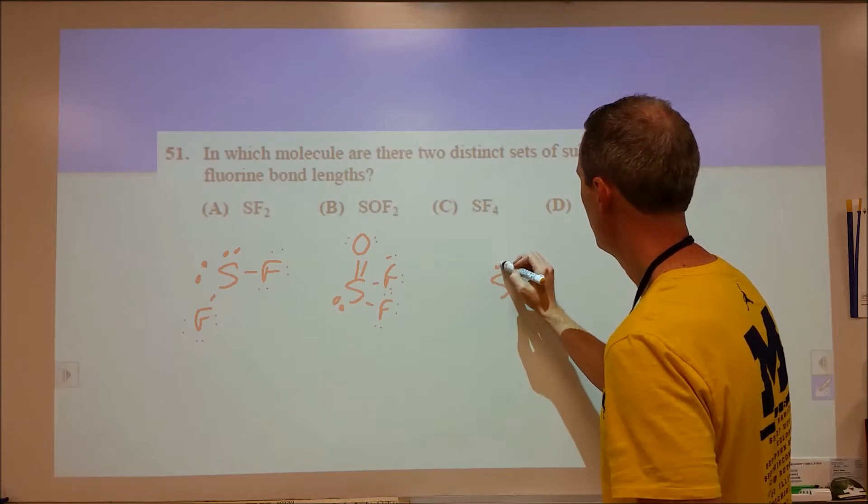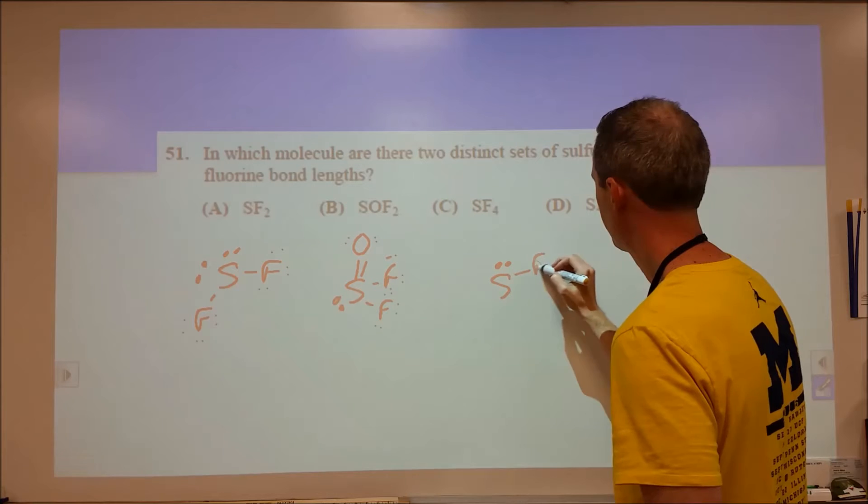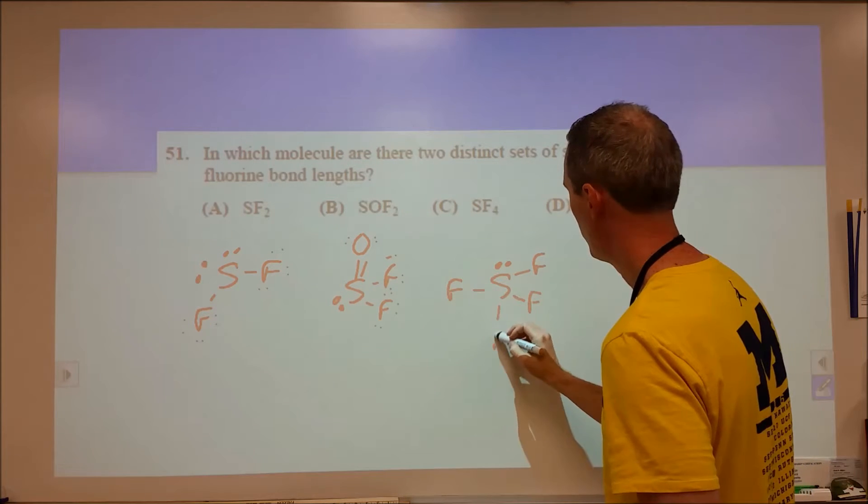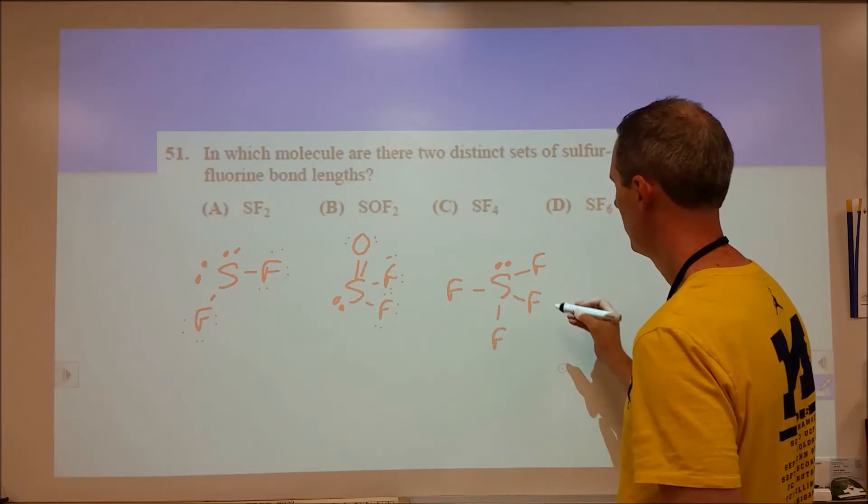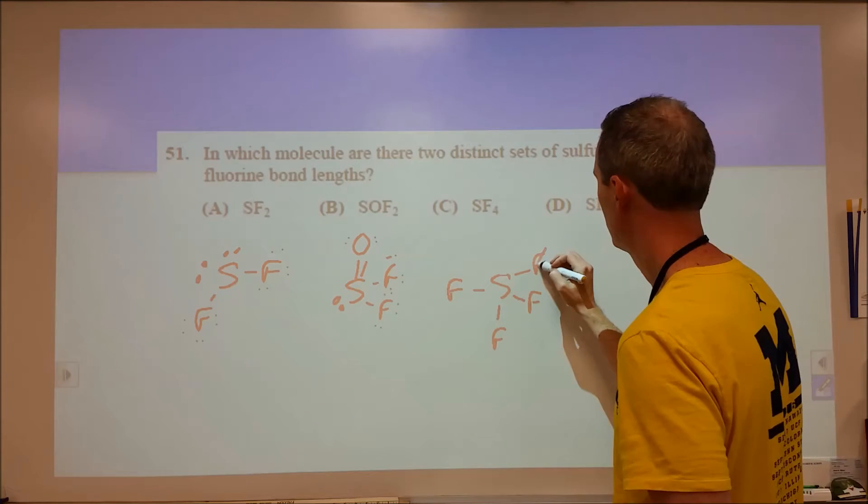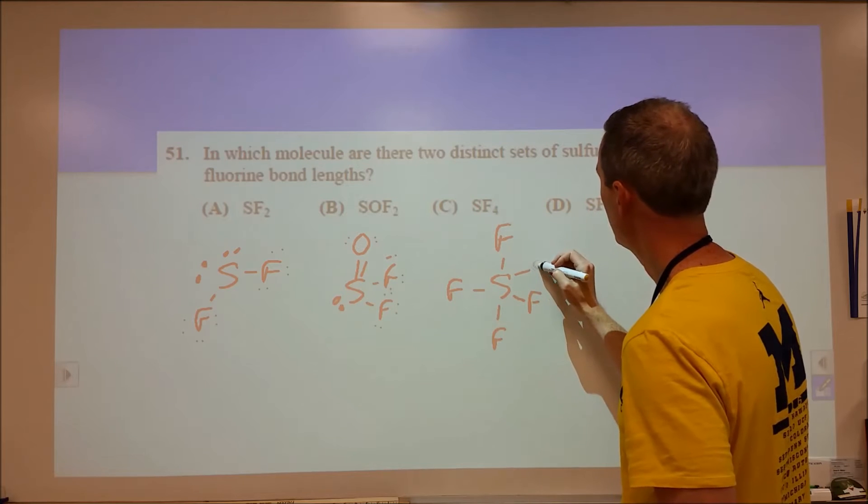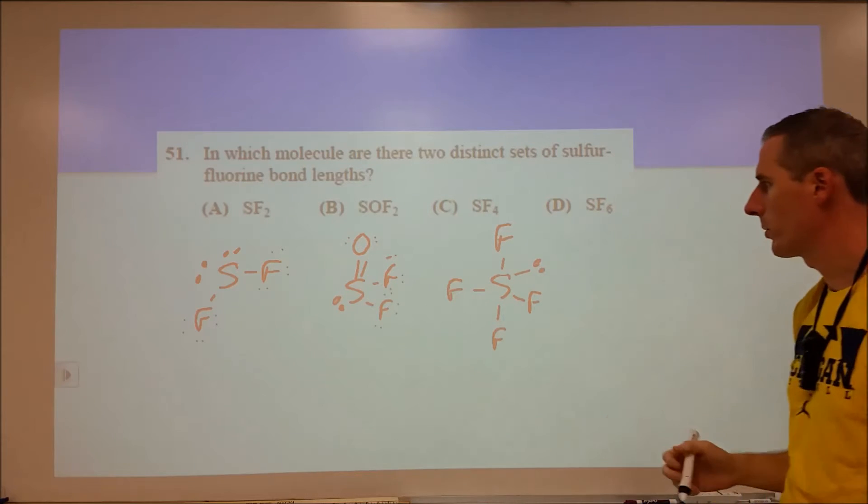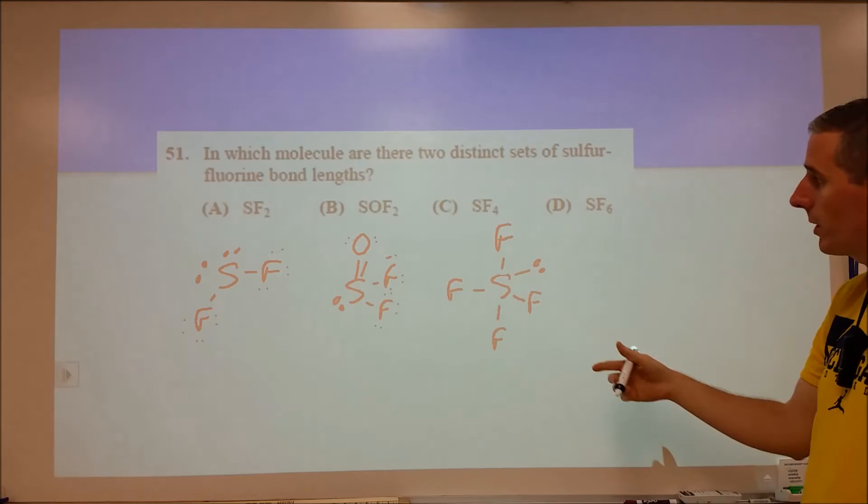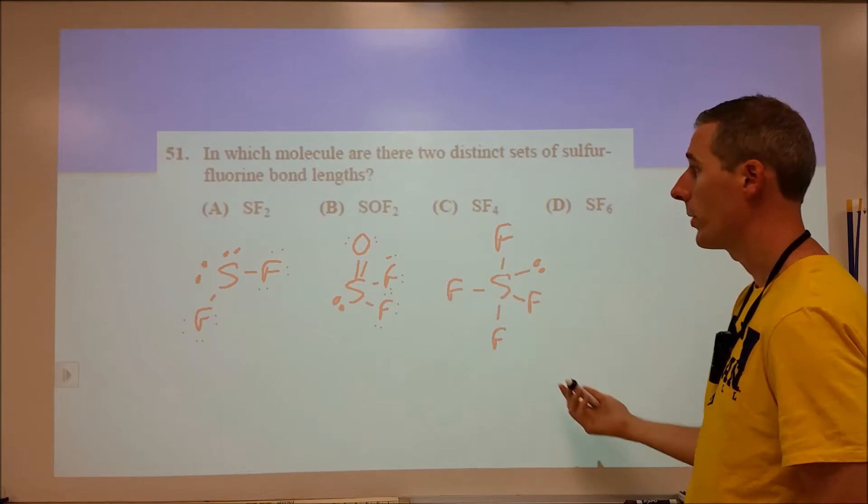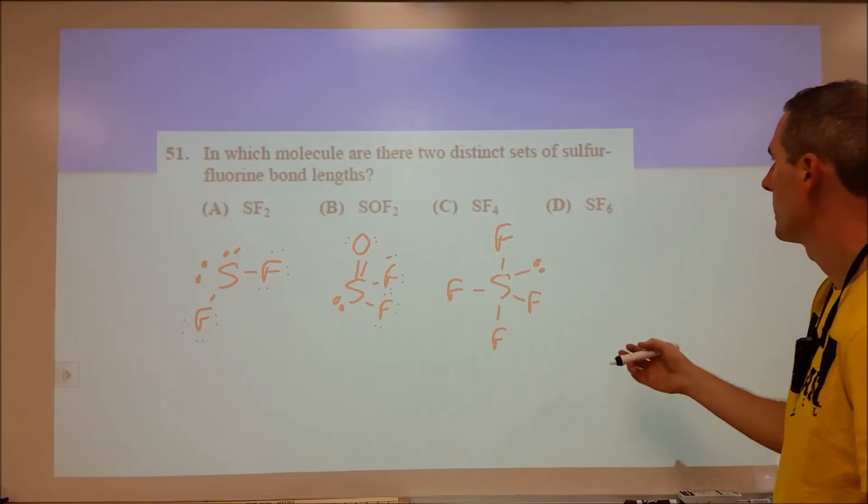And then SF4, we're going to have the equatorial positions and one axial. Just kidding. Both at the axial and then we're going to have one lone pair at one of the equatorial positions. So we have our seesaw shape. And that, you're going to see different bond lengths potentially for these two, I guess.